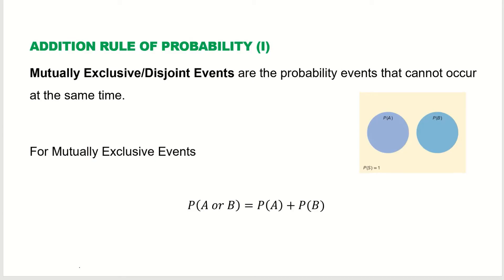Welcome to this video on Addition Rules of Probability. We are going to explore these rules in two parts. The first one is Addition Rule of Probability 1, where we'll be talking about mutually exclusive or disjoint events.